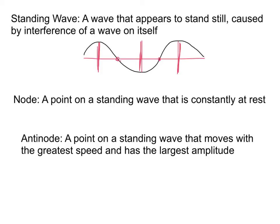There are names for these aspects here as well. The node is these points that don't move. The node is a point of a standing wave that is constantly at rest. Whereas an anti-node is a point on a standing wave that moves with the greatest speed and has the largest amplitude.